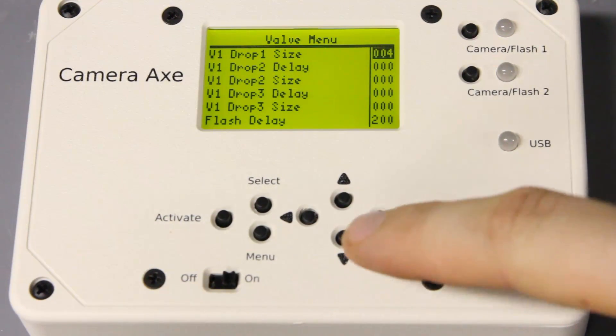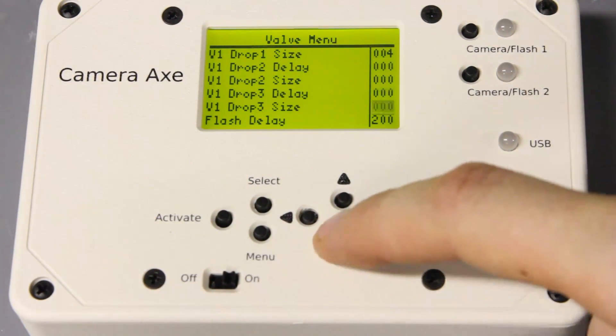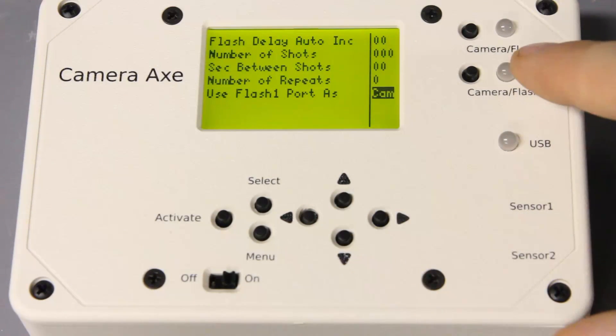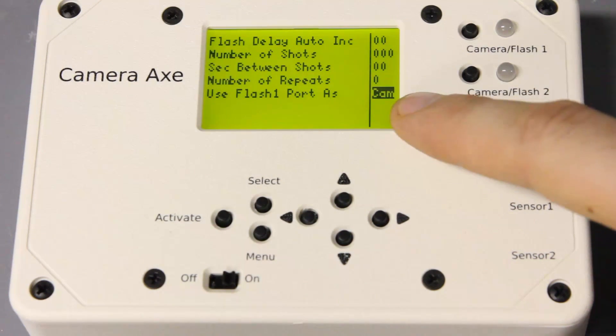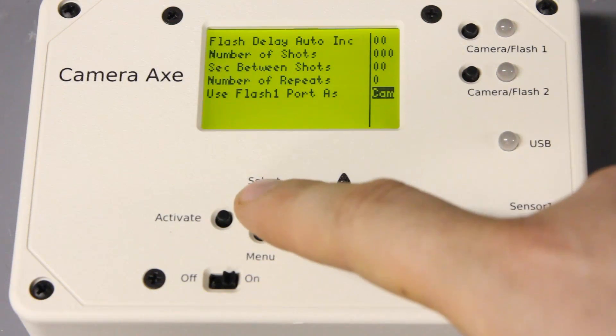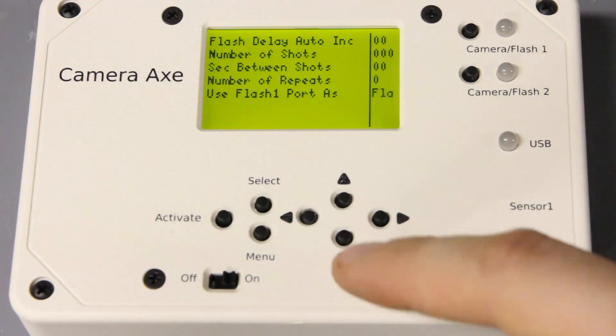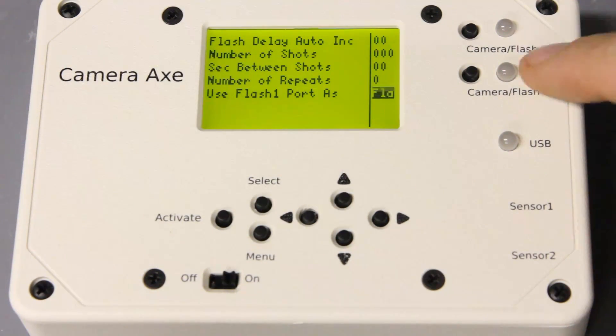The first one is on the valve menu. If you go to the bottom of the valve menu, you can now control the camera flash port to either be a camera, which is what it's always been before, or you can make it a flash.